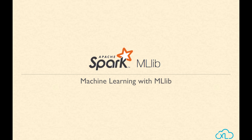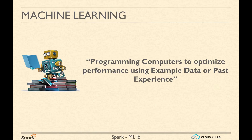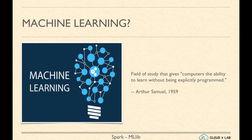Welcome to a short session on MLlib, the machine learning library of Spark. Let us first understand what machine learning means. Machine learning essentially is programming computers to optimize performance using example data or past experience. In the words of Arthur Samuel, machine learning is the field of study that gives computers the ability to learn without being explicitly programmed.